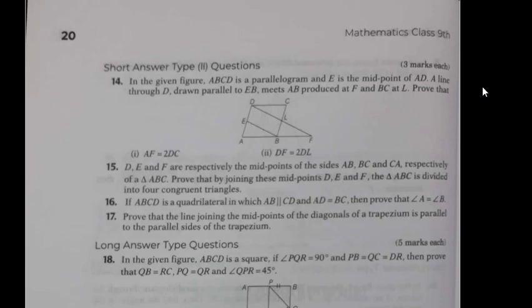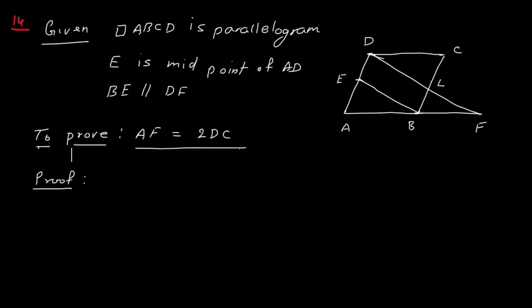In the given figure, ABCD is a parallelogram and E is the midpoint of AD. A line through D is drawn parallel to EB, meeting AB produced at F and BC at L. We have to prove that AF equals 2 times DC, and second, DF equals 2 times DC. So let us draw the diagram.